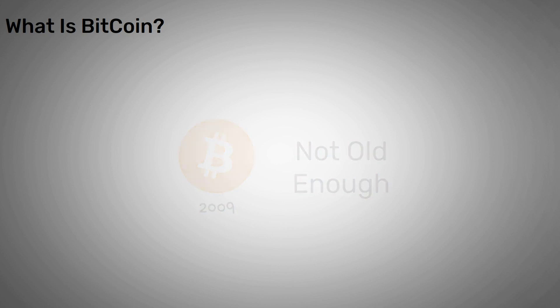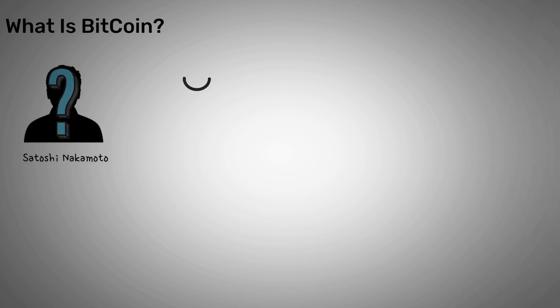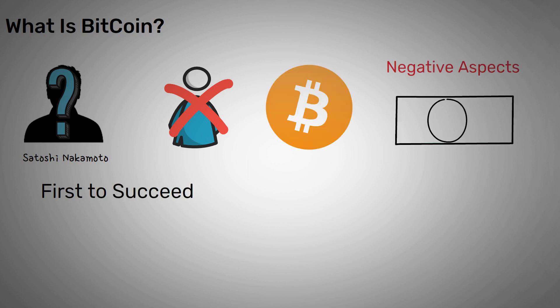The ever elusive Satoshi Nakamoto is to thank for the first cryptocurrency. Well, it wasn't the first to be developed, but it was the first to succeed. They wanted a virtual currency free from all of the negative aspects of physical money. The cryptocurrency would be decentralized, secure, yet still accessible. By doing so, the first successful cryptocurrency was born.